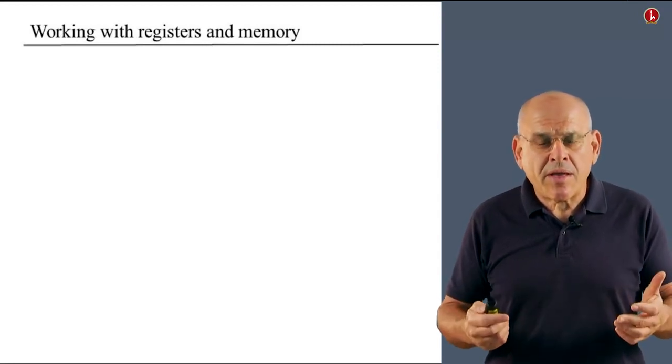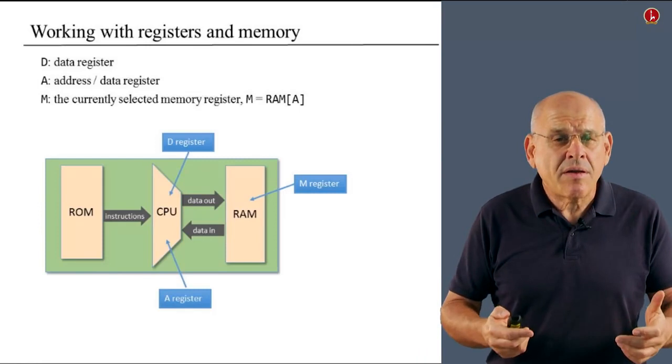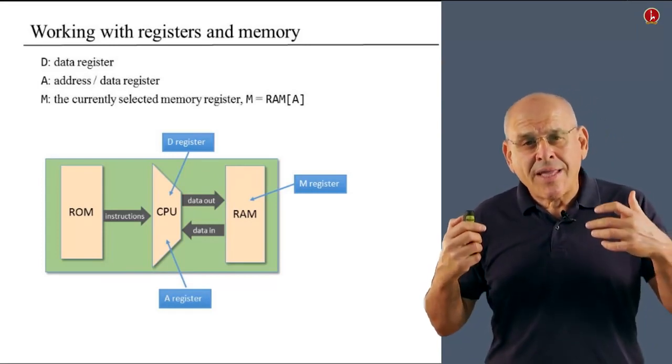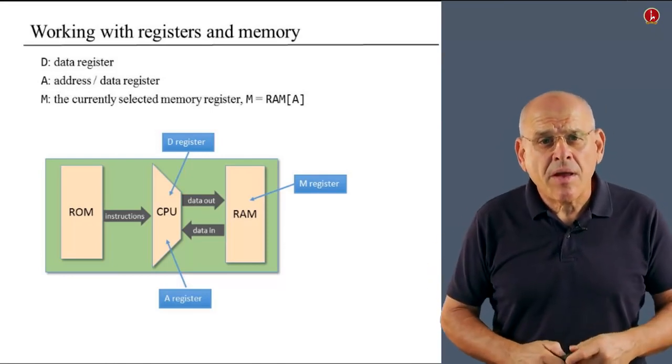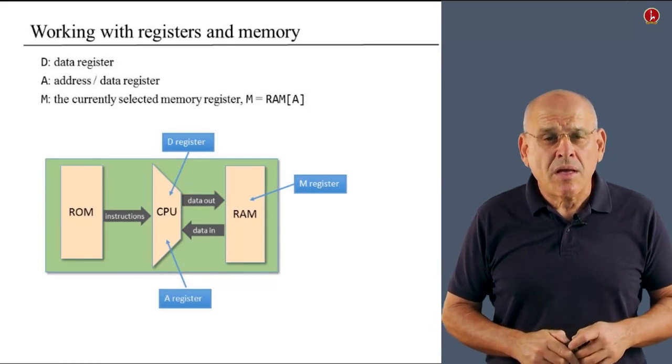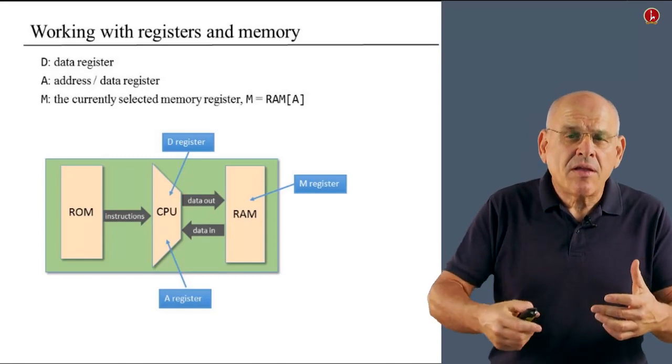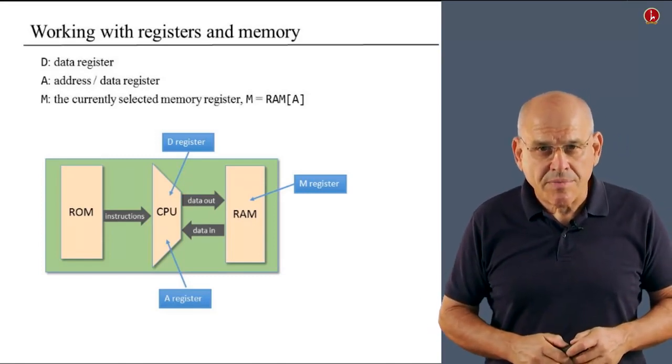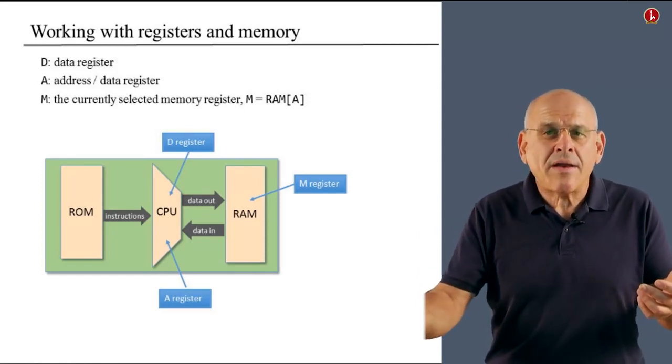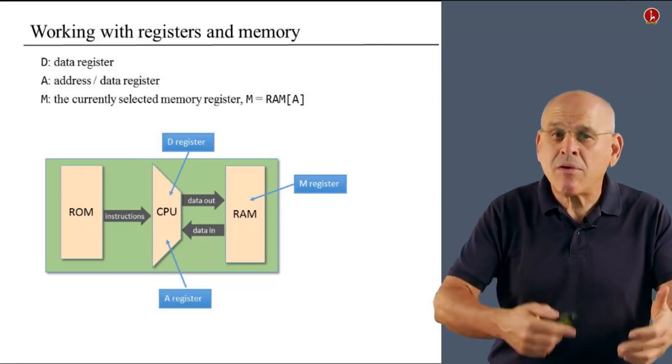All right, so registers and memory is the bread and butter of low-level programs. And that's what you do all the time. You manipulate registers which are either the two standard registers that we have, D and A, which reside inside the CPU. If you recall, the data register can hold a single 16-bit value. The A register can hold either a data value or an address depending on the context in which the programmer wants to use this register. And finally, we use the letter M, or the mnemonic M, to refer to the currently selected memory register.